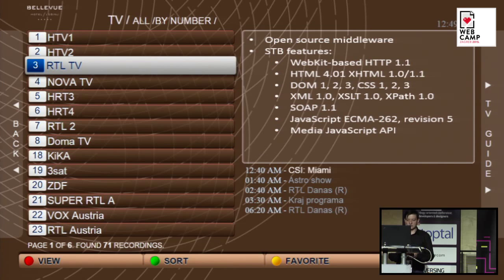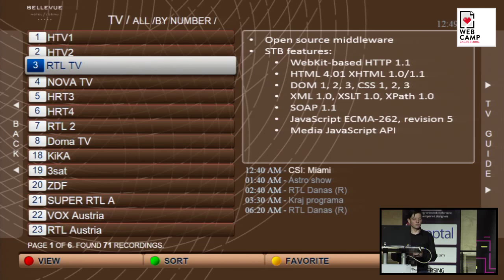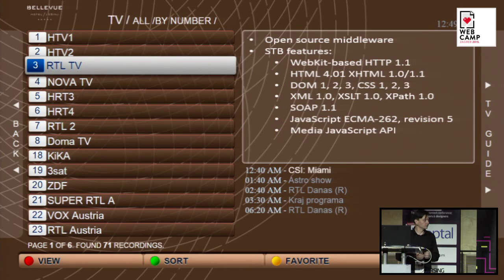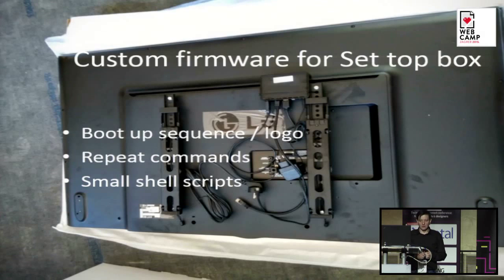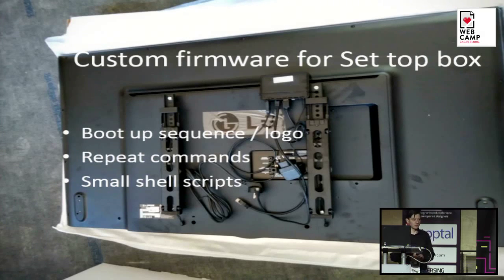Some things about the set-top boxes: they are based on WebKit, so they render everything fine, and they have JavaScript extensions for multimedia. You can call local services on the set-top box if you need — and this is the part that saved us on the big problem we had. We also had to create custom firmware for the set-top boxes. We had to customize the boot-up screen so that the first time the set-top box boots, it shows the hotel name and everything.